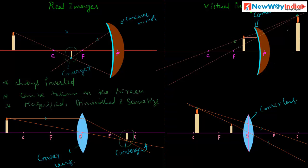In the case of a concave mirror, when the object is placed between the principal focus and the pole, we can get a virtual image on the other side of the mirror. In the case of a convex lens, if you place the object between the principal focus and the optical center, we can get a virtual image. The characteristics of virtual images: they are always erect, and they cannot be taken on a screen. You can get magnified, diminished, or same-size virtual images.